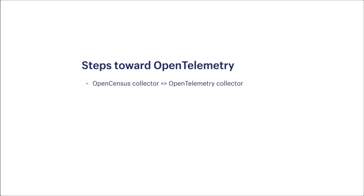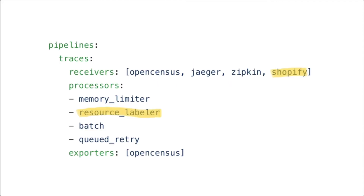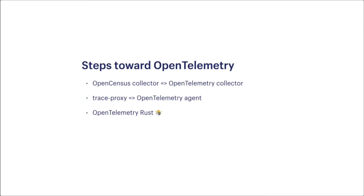I'm glossing over the stress and anxiety implicit in this process, but it worked well. The downside is that we have an endpoint called 'oc-collector' that's actually backed by the OpenTelemetry collector, but it felt like an acceptable trade-off. The next challenge was to replace our trace proxy daemon set with the OpenTelemetry agent. The agent is really just a collector with a smaller footprint and a slimmed down pipeline. You'll see an additional processor we built called Resource Labeler, which grabs metadata about the node and its environment from a couple of different places and augments spans with information like the node name, cluster name, GKE version, and availability zone. Something like this now exists in the upstream project, and we should probably move to that at some point.